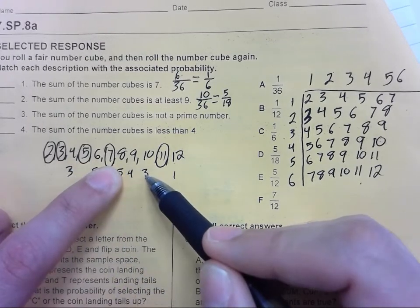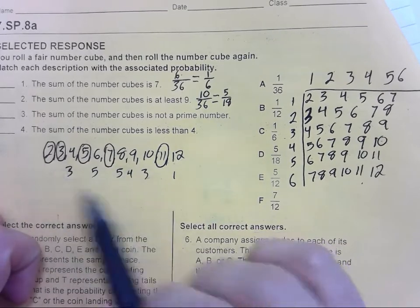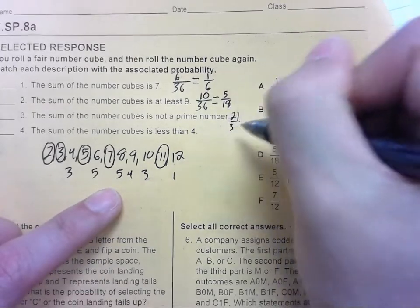So this is 20, and that gives us 21 over 36.